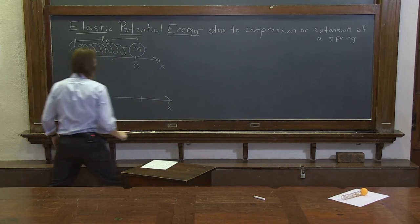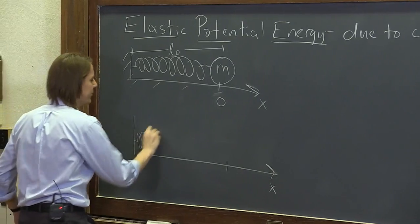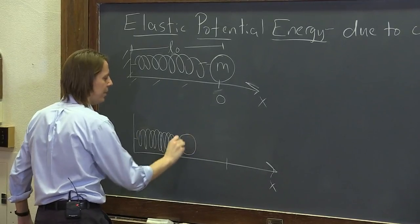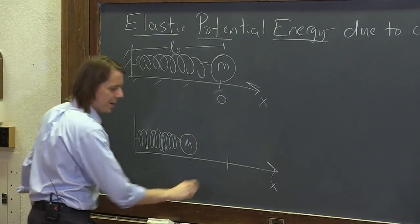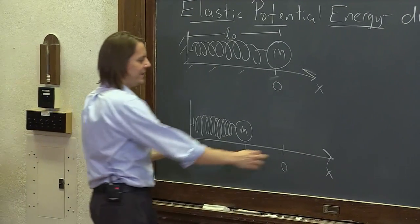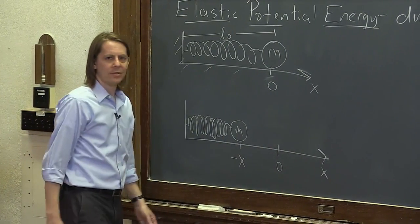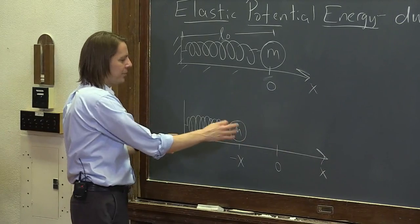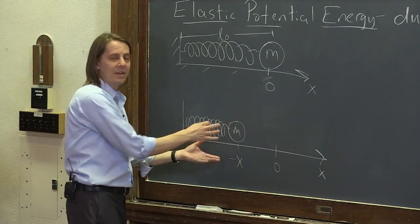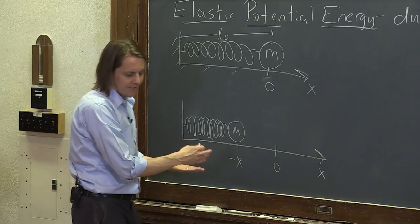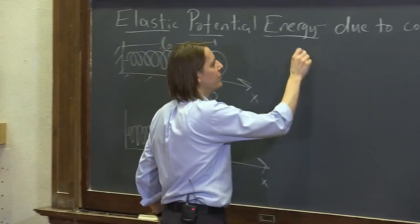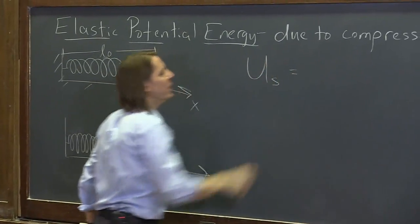We had it originally at the origin and now we have compressed the spring. Sal the mass is now here—we were at the origin and now we're at position minus x. We compressed it some distance from zero to minus x, and we have done some work on it. If you do work on it but don't give it any kinetic energy, it must be that you gave it potential energy—elastic potential energy, U_s.